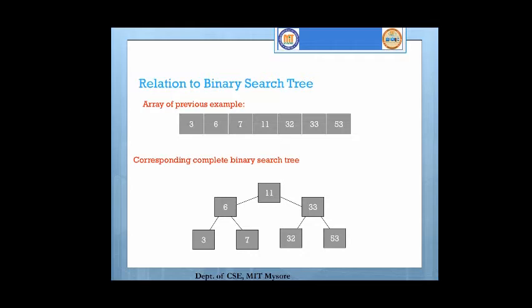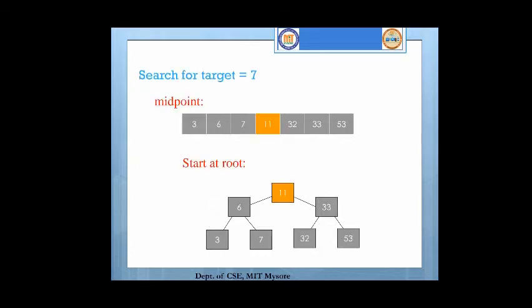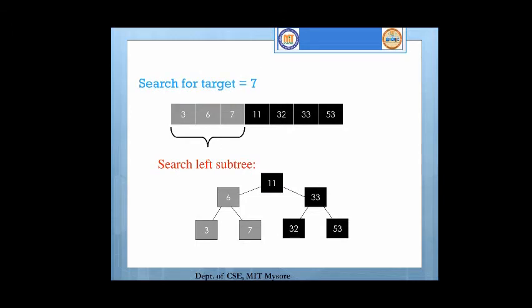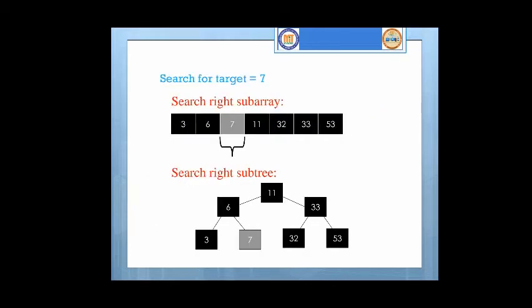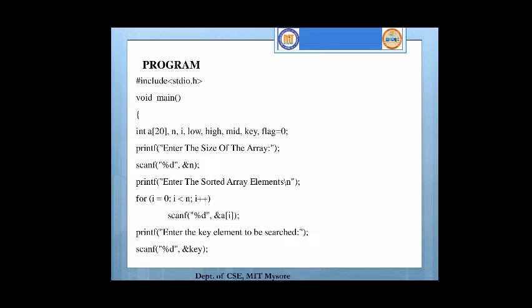And this is a binary tree representation to make you understand well. Here, again the mid element is 5, that is 11. And next, the right part of the tree is discarded, only the left part is considered. And in that left part, 6 will be the mid element. And again, since 7 is greater than 6, left part of the tree is discarded, only the right part is considered. And 7 is equal to 7, the message will be printed that the target element is found at the position by printing the mid element plus 1 position.